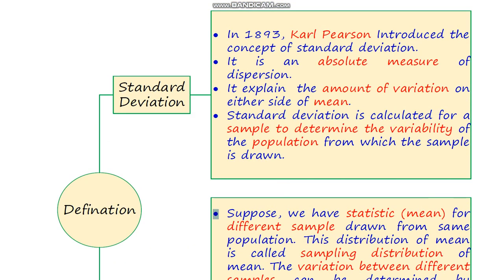First I start with standard deviation. Carl Pearson in 1893 introduced the term standard deviation. It is an absolute measure of dispersion, and with the help of standard deviation we explain the amount of variation on both sides of the mean. Standard deviation is calculated for a sample to determine the variability of the population from which the sample is drawn.